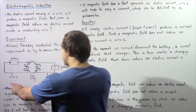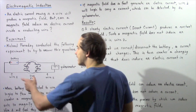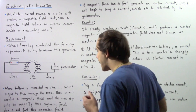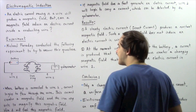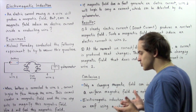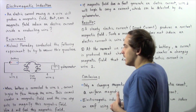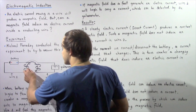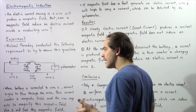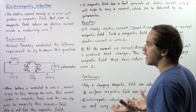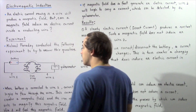Suppose we have two conducting wires: wire number one, connected to a battery and a voltage difference, and wire number two, which does not have a battery but has a galvanometer — a device that is able to detect an electric current. An iron ring is connected to both wires, and we use this ring to magnify the magnetic field produced by the electric current moving in wire number one.